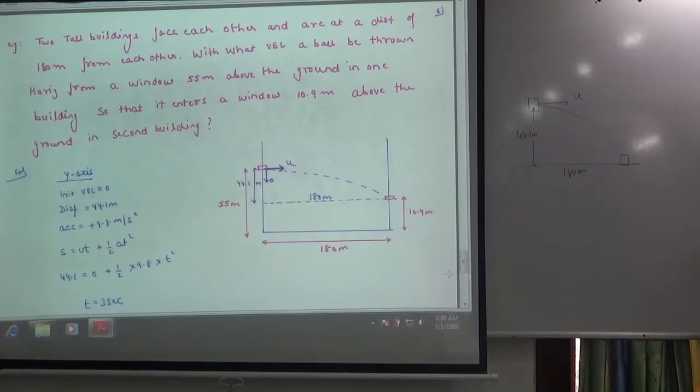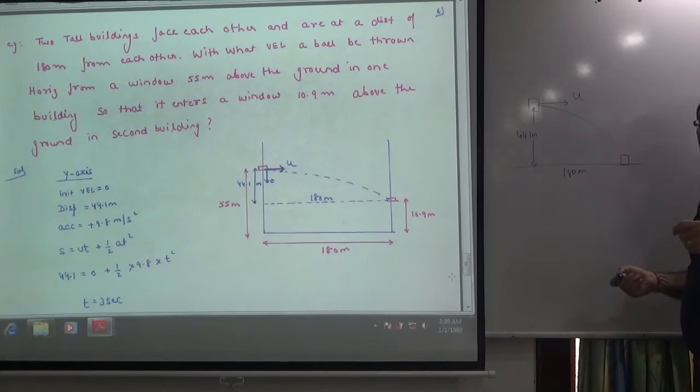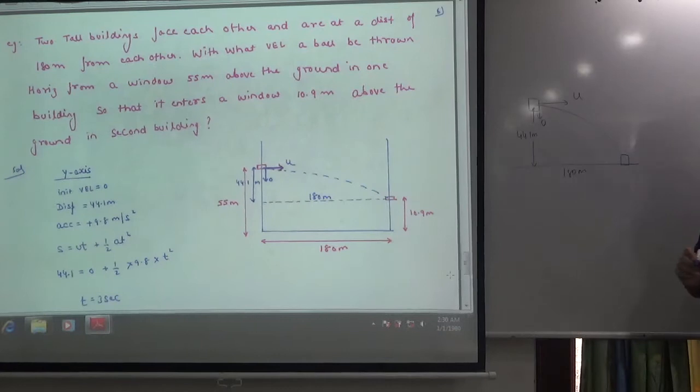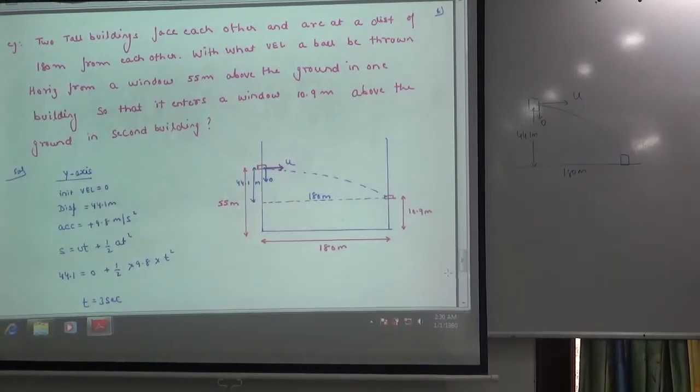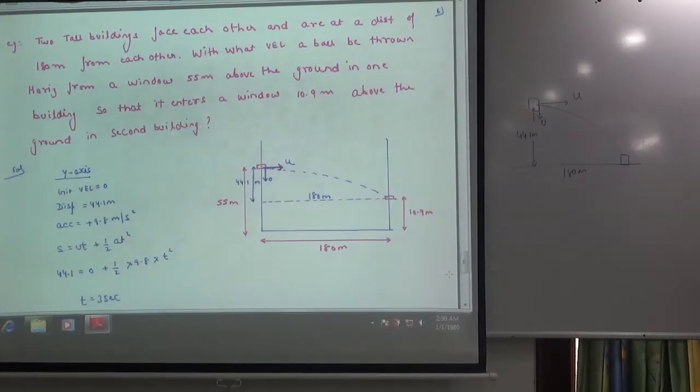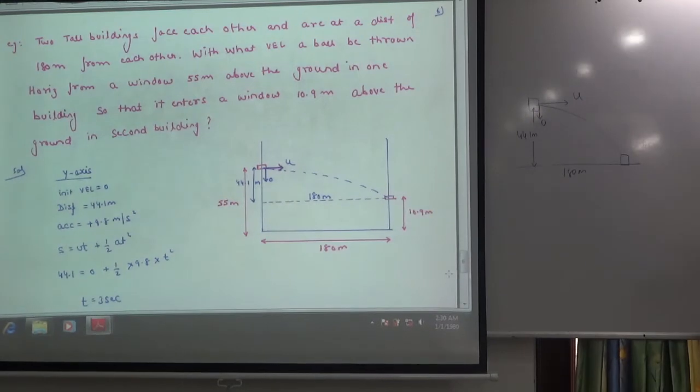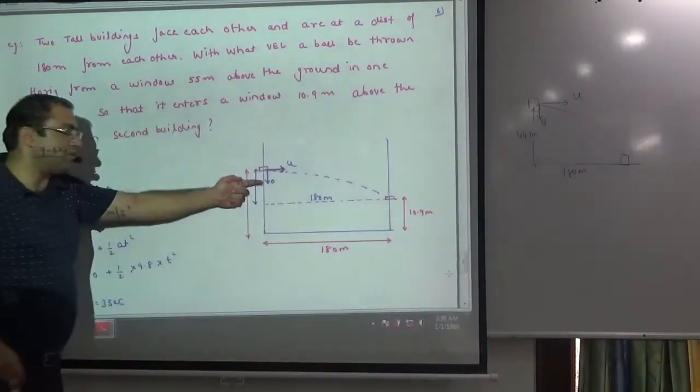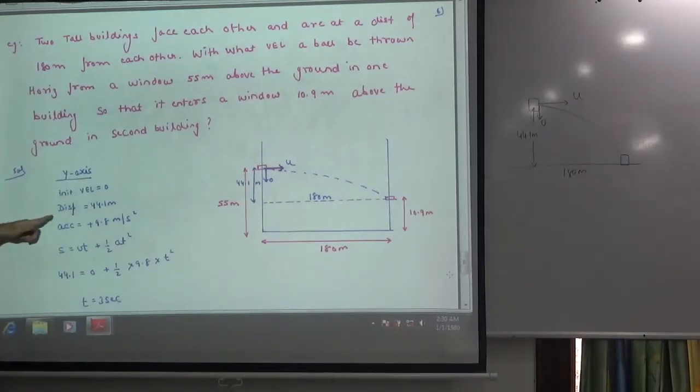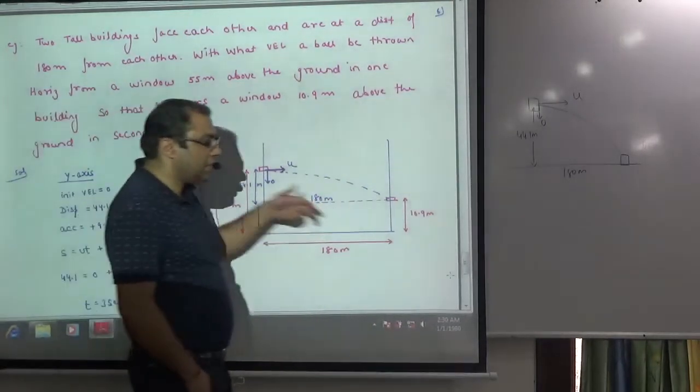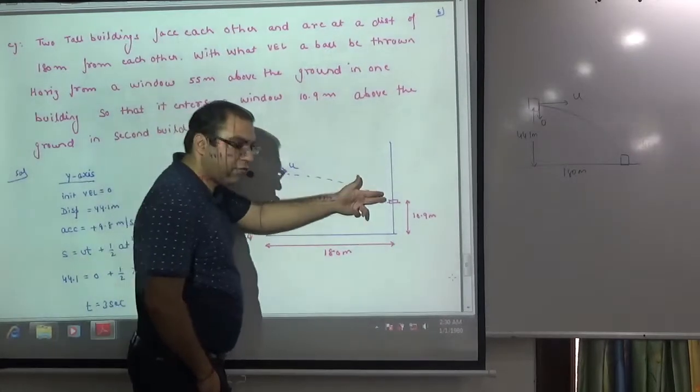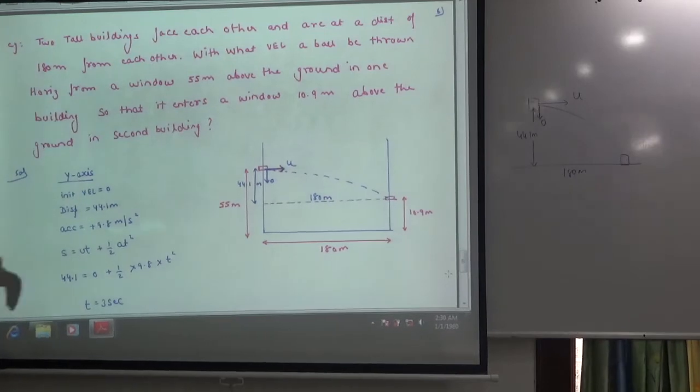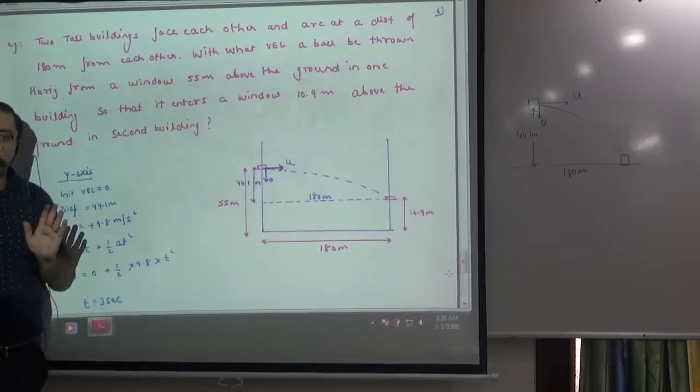Okay. So now in this case, the ball is thrown horizontally. Initial vertical velocity will be 0. Horizontal, initial vertical velocity is 0. Now we can solve this. If you apply the equation in the y-axis, initial velocity will be 0. Displacement in the y-axis is 44.1. Acceleration will be 9.8 downward. Apply s = ut + 1/2 at².